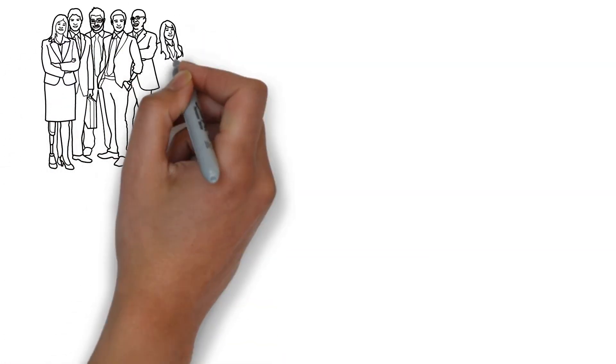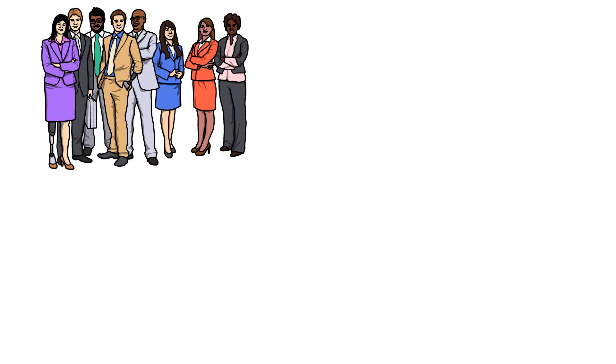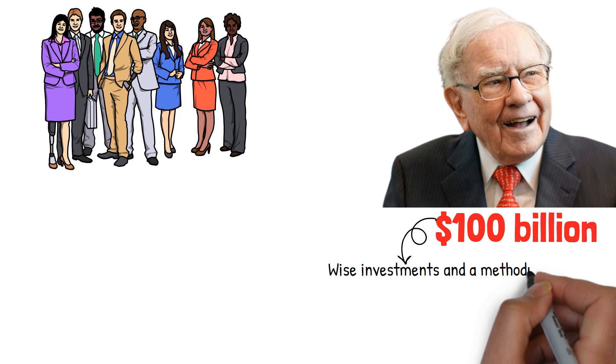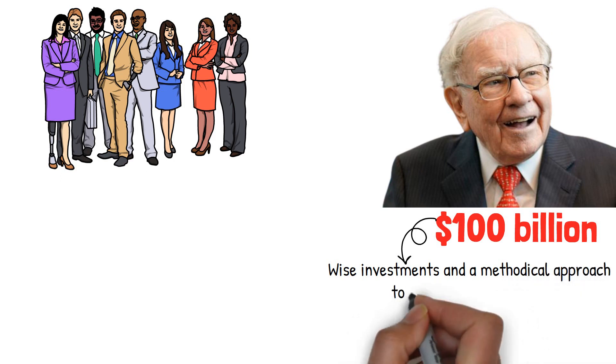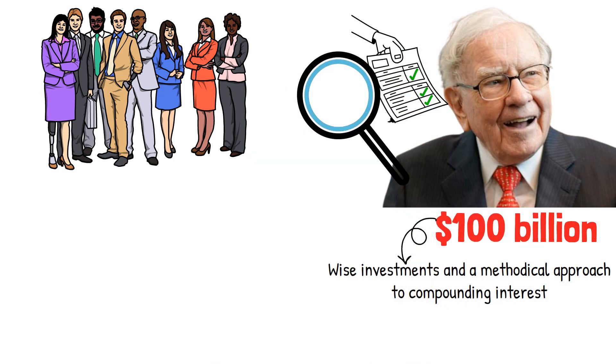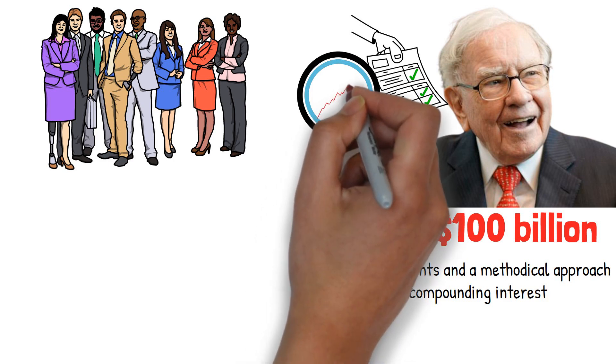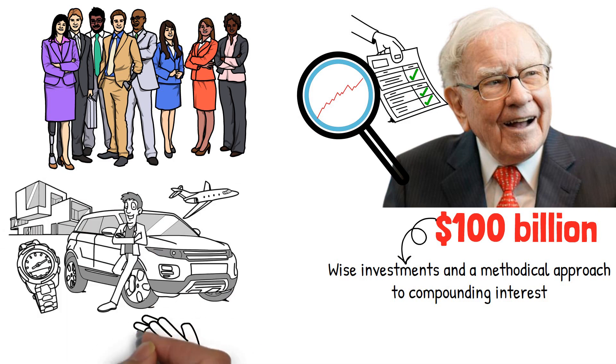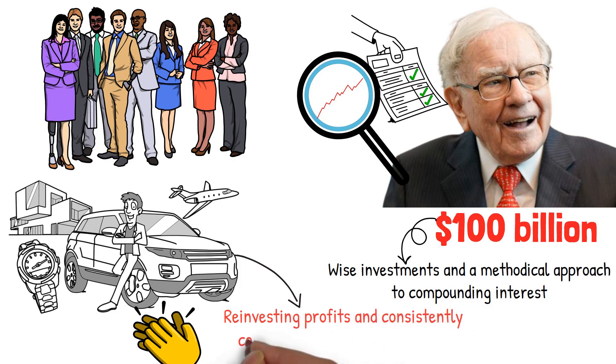Compounding interest has helped many famous investors and entrepreneurs amass wealth. With a net worth of more than $100 billion, Warren Buffett is one of the world's wealthiest people. Buffett is regarded as one of the most successful investors ever, having amassed much of his fortune through wise investments and a methodical approach to compound interest. Buffett is well-known for his long-term investment strategies and ability to spot undervalued companies with high growth potential. Buffett has achieved incredible financial success and has become one of the most respected figures in finance by reinvesting his profits and consistently compounding his returns over time.